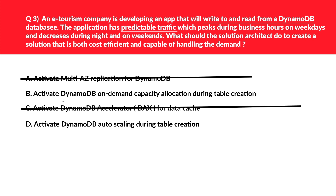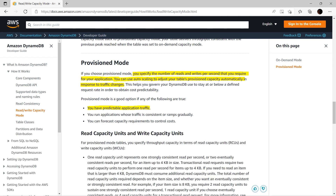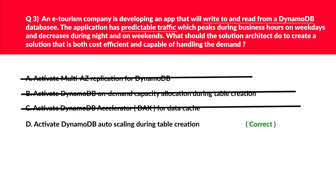Let's look at option B — activating DynamoDB on-demand capacity allocation during table creation. DynamoDB on-demand is meant for unpredictable traffic. Though it will still work, it's not the best solution compared to auto scaling, since the question clearly mentions predictable workloads. Per the official documentation, for predictable application traffic you should specify reads and writes per second and use auto scaling to adjust provisioned capacity automatically in response to traffic changes. Hence we log this as the correct answer.